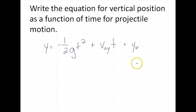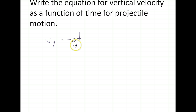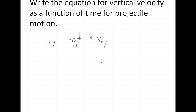Write the equation for vertical velocity as a function of time for projectile motion. Our velocity formula for vertical is v y equals negative gt. It's kind of like our acceleration: velocity equals acceleration times time. Here we've got g for acceleration due to gravity, plus our v naught y, our initial velocity in the y direction. We'll use this one if somebody's throwing something down or shooting something down. Most of the time, v naught y will be zero if it's just being dropped.